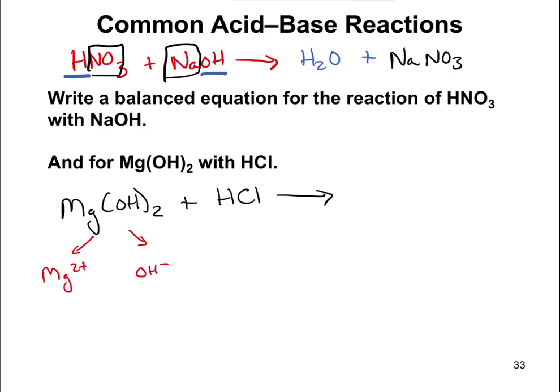If we go to the HCl and ask what its two pieces are, there's going to be H+ and Cl−. I know H+ doesn't exist free in solution, but you can picture it as: one piece is H+ and the other piece is Cl−.